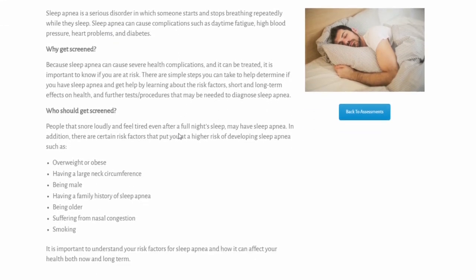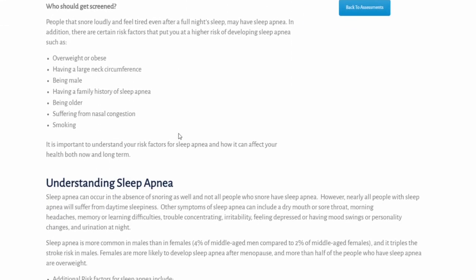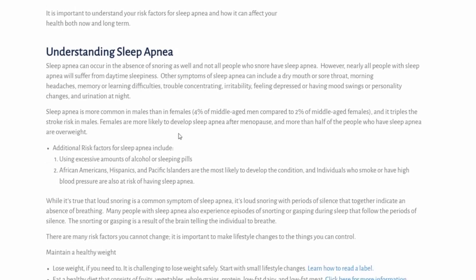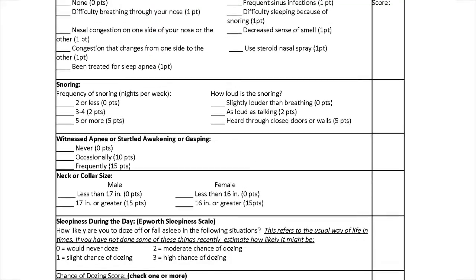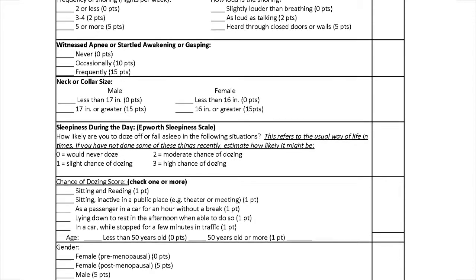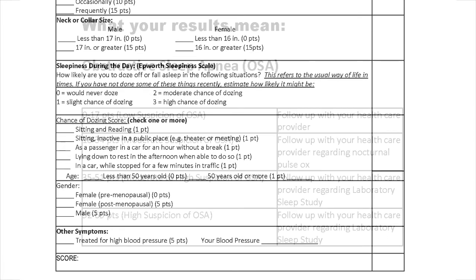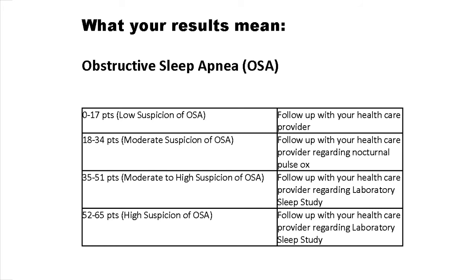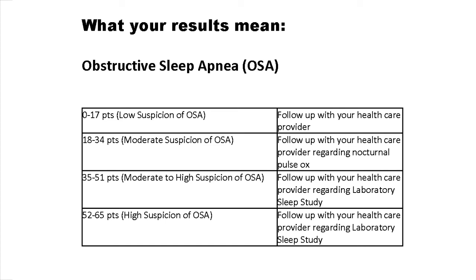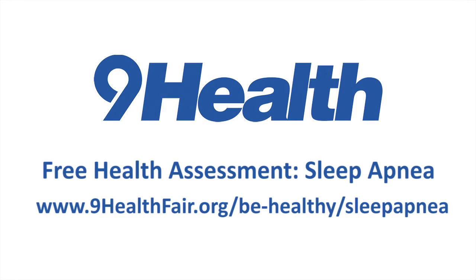The 9Health online sleep apnea risk assessment is a questionnaire that takes just a few minutes to complete. It asks about difficulty breathing, congestion, snoring, neck collar size, sleepiness during the day, and your chance of dozing. You add up your score and it tells you what your results mean so you can follow up with your healthcare provider. Anyone with a score greater than or equal to 18 would likely need further testing. It is more important than ever to keep tabs on your health and get ahead of problems before they become a bigger issue.